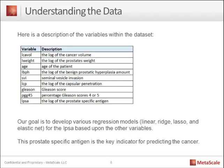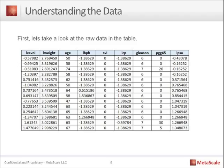The prostate specific antigen is a marker indicating whether or not you have prostate cancer — if it's at a certain level or beyond, it's a precursor for a cancerous tumor. One important aspect before getting into any data science work is to look at the dataset and get familiar with it. We can see here that we have a number of variables that are all numeric, which is good, and on the right-hand side we have our variable of interest, the LPSA variable, which is what we're going to be predicting.